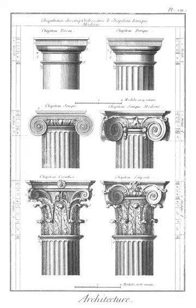Gablets: triangular terminations to buttresses, much in use in the early English and decorated periods, after which the buttresses generally terminated in pinnacles. The early English gablets are generally plain and very sharp in pitch. In the decorated period they are often enriched with paneling and crockets. They are sometimes finished with small crosses, but more often with finials.